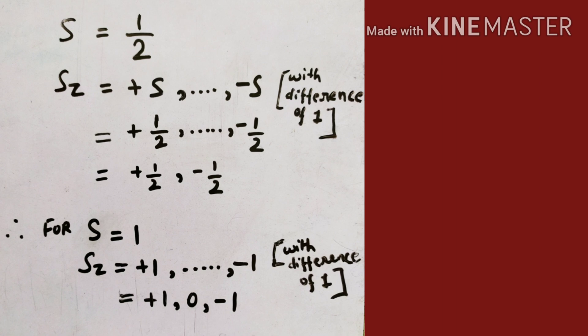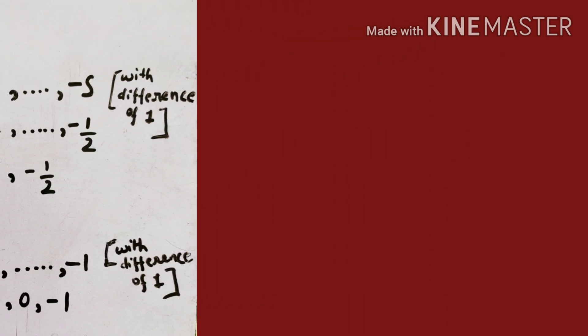Similarly, for a particle with spin-1, the Z-components range from plus-1 to minus-1 with a difference of 1, giving three components: plus-1, 0, and minus-1.